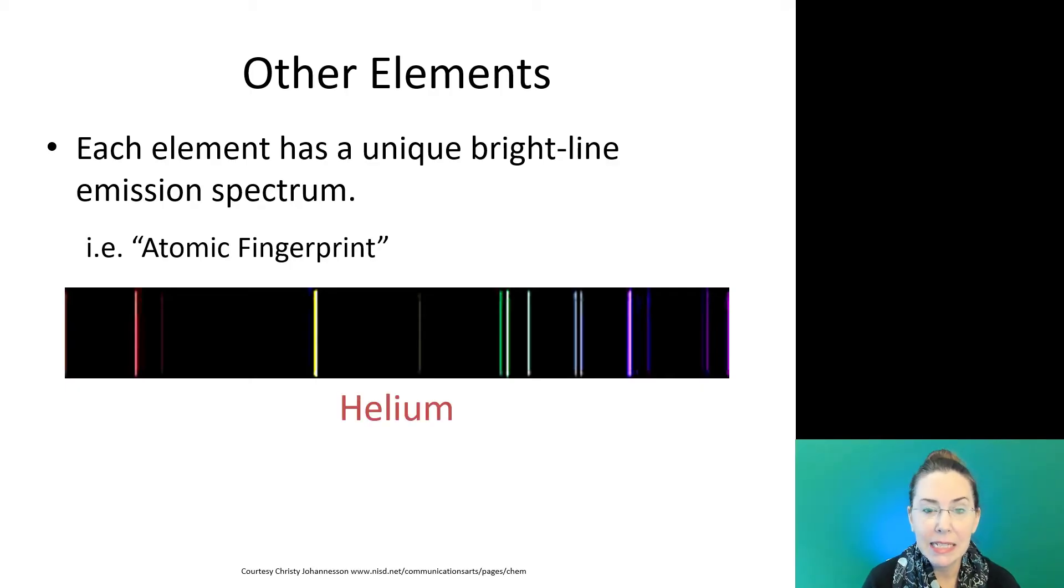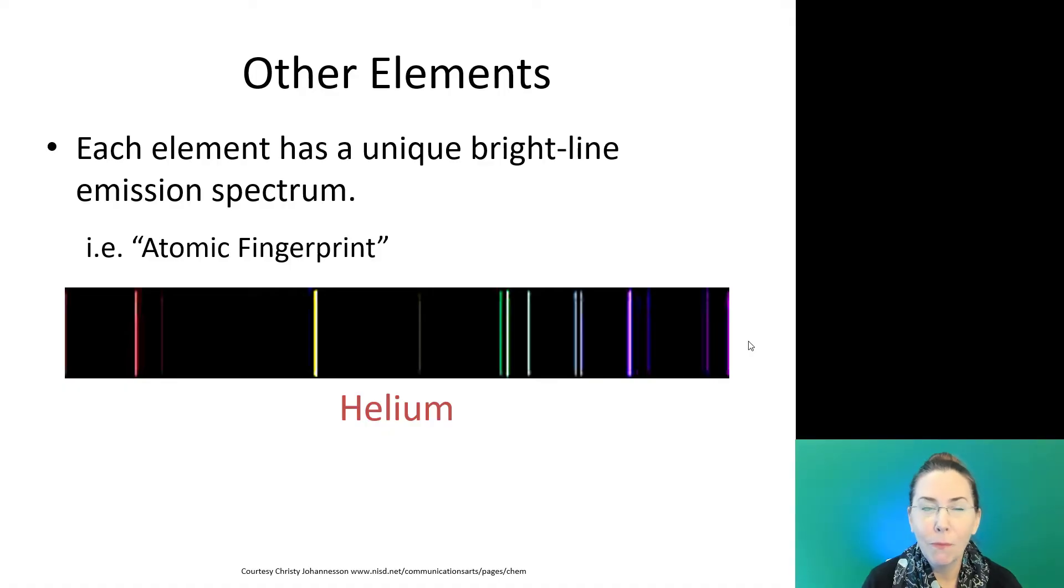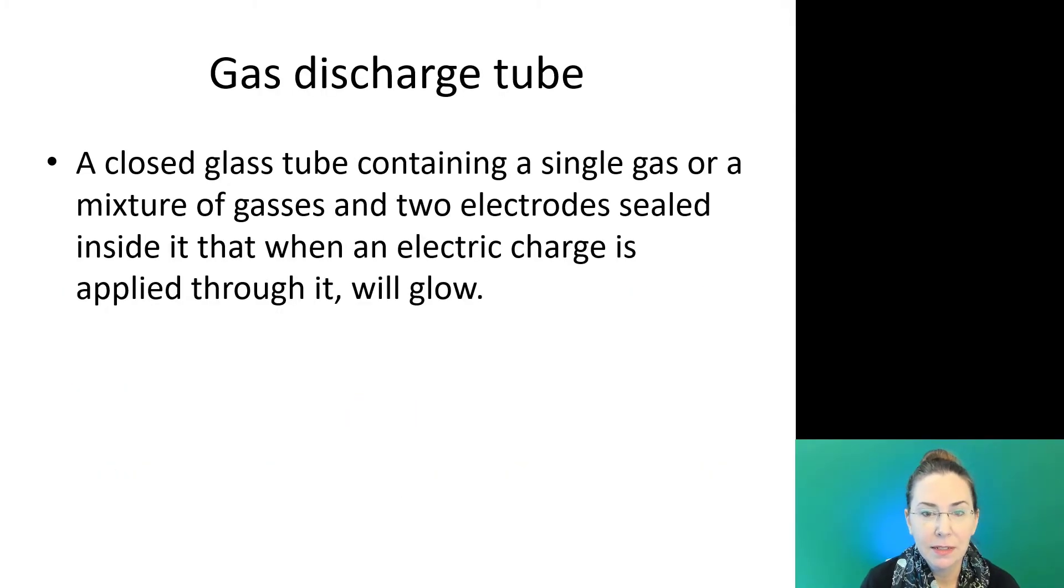If each element has a unique bright line emission spectrum, we can treat this like its atomic fingerprint. For example, this is the bright line emission spectra for helium. You can see we have a bright red band, a slightly more faint band in the reddish orange range, quite a bright band in yellow, another one in yellow, a few in the green range going up into blue and finally into violet. Why do we have so many colors when helium only has two electrons? Well, remember, there are many different ways those electrons can get excited. They can move up one level, two, or three, and you have all these possibilities creating all these different colors of light.